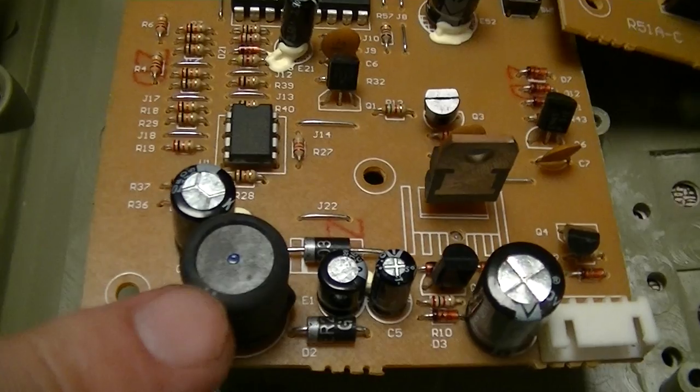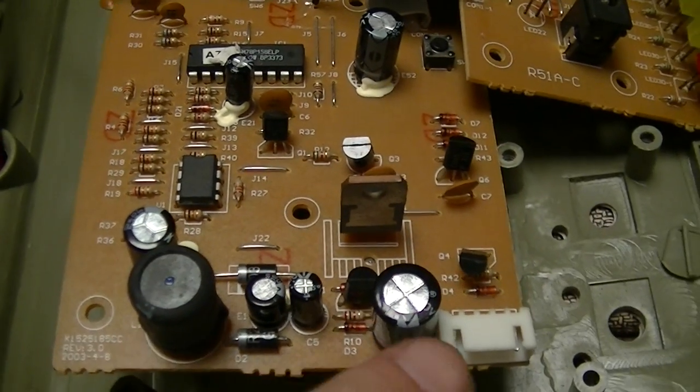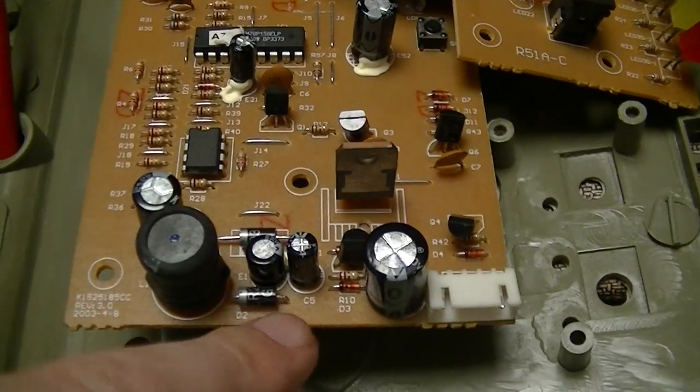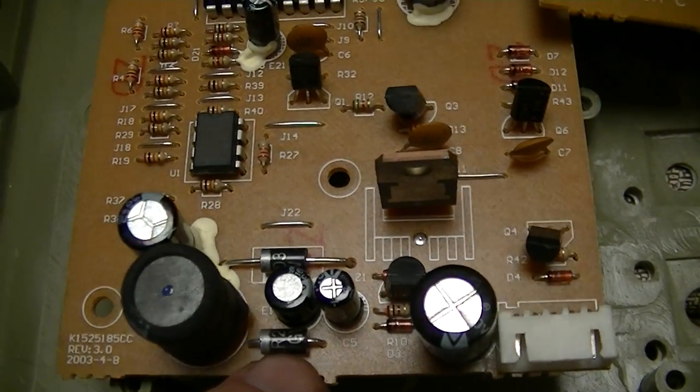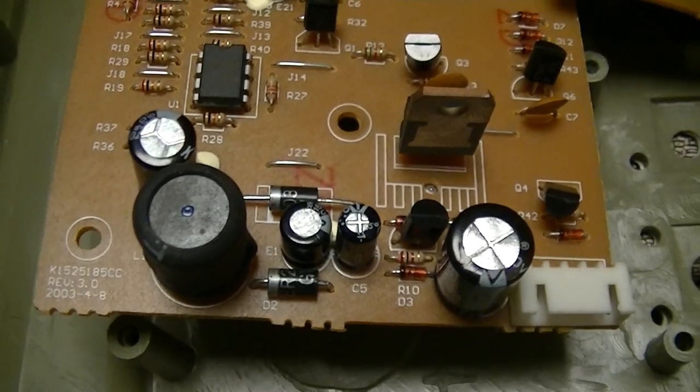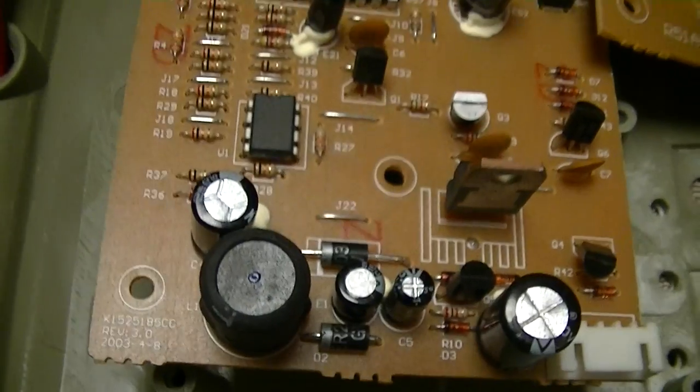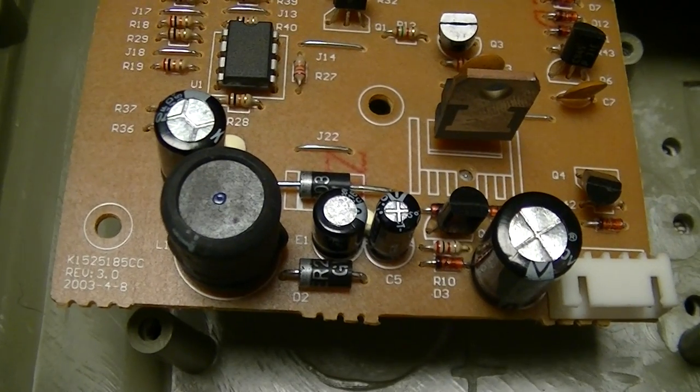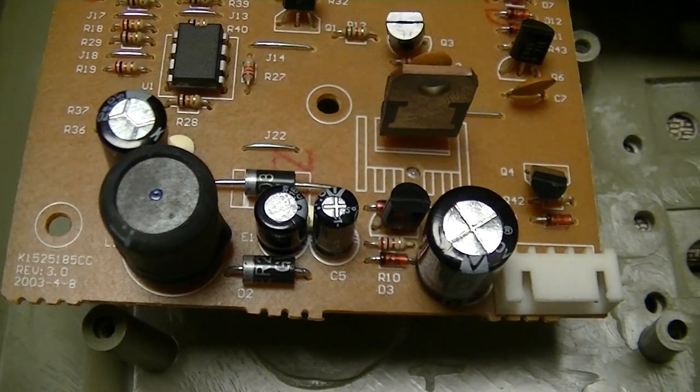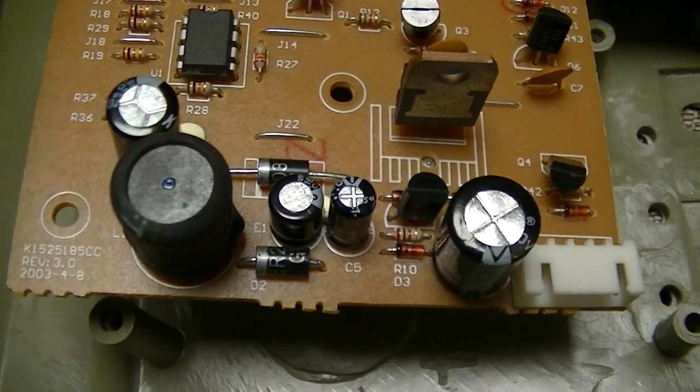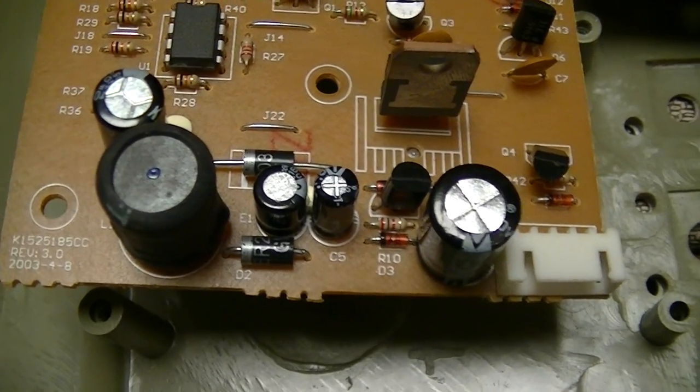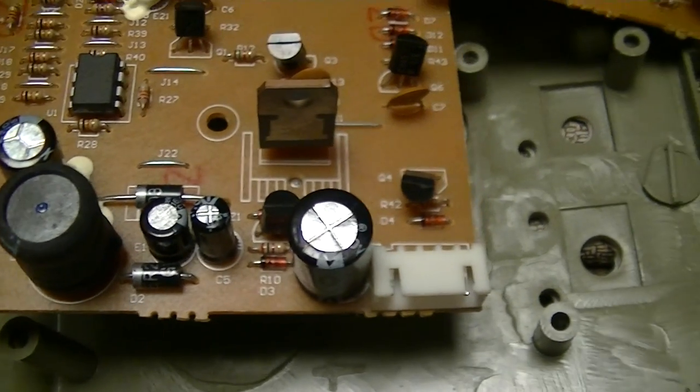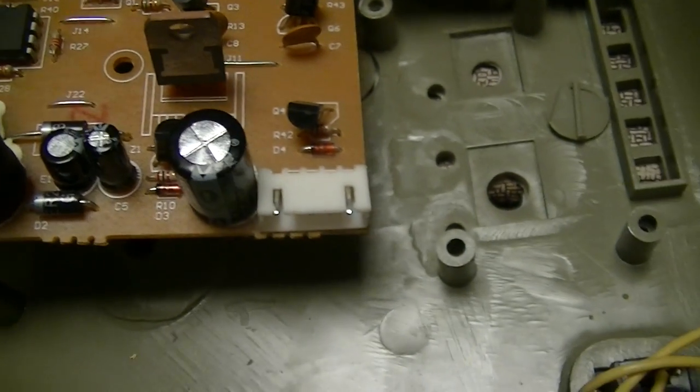Then there's the inductor for the buck converter, ripple suppression capacitors—all of them cheap crappy Chinese no-name ones—and a pair of HER203 ultra-fast silicon rectifiers, which is somewhat unusual as normally you'd expect to see a Schottky rectifier in this application. The potential drop across them is substantially higher, so normally you don't see them in this kind of application.